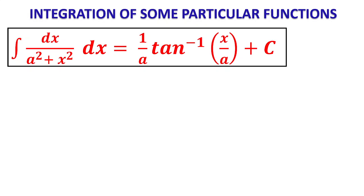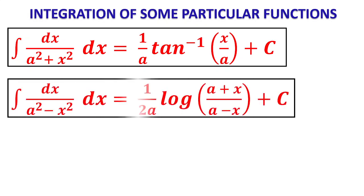We have to identify what is 'a' and what is in place of x. Remember: in place of x, only a linear factor of the form (x + 3), (x + 4), etc. is allowed. Similarly, if it is ∫dx/(a² - x²), we apply the next formula.